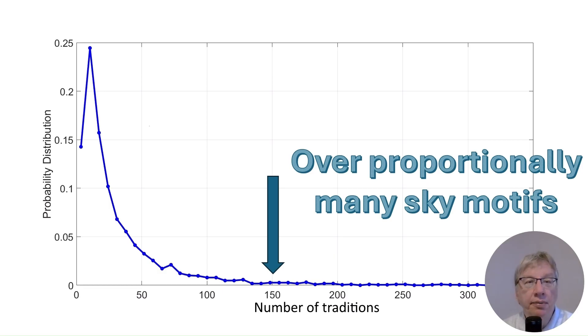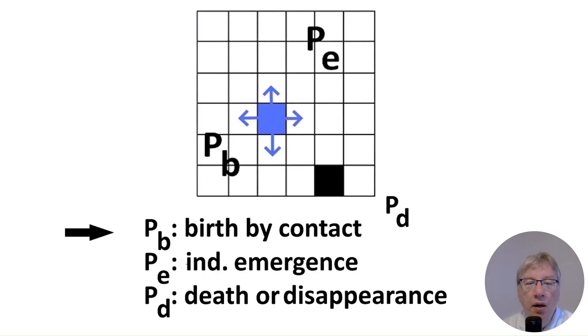Let's describe the model. We model the different traditions on the earth using a square grid. This is an oversimplification made by many researchers. The model contains three components, each described by a distinct probability.